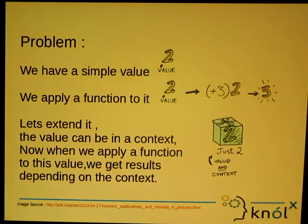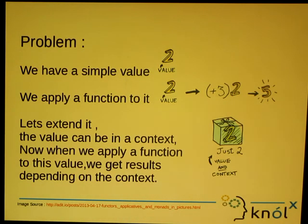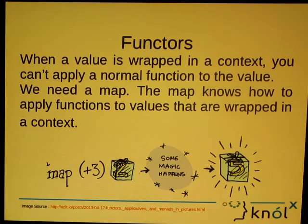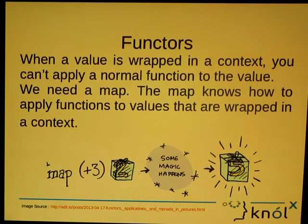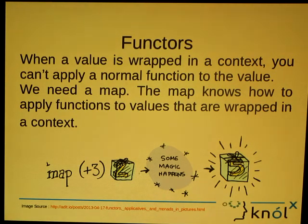We have a simple value and we apply a function to that value and we get a result. But now let us go a step further. What we now have is a value wrapped in some context, and the result of applying a function will depend on that context. So how do we deal with this problem? The solution is Functors. When a value is wrapped in a context, we cannot apply any normal function to that value because it is wrapped inside some container. So Functors provide us a map. The map knows how to unwrap that value, apply the function, and then rewrap that value back into the context.